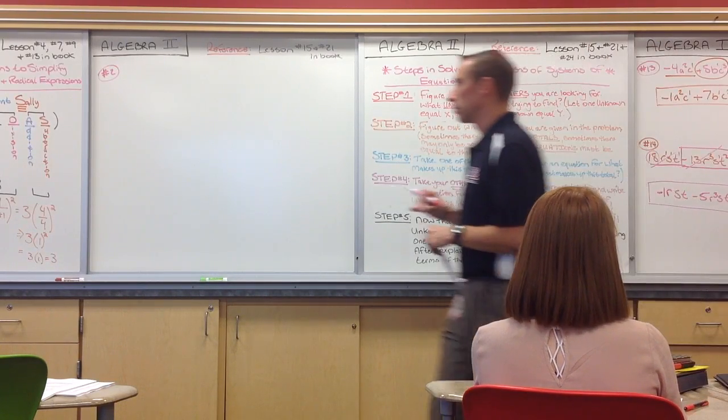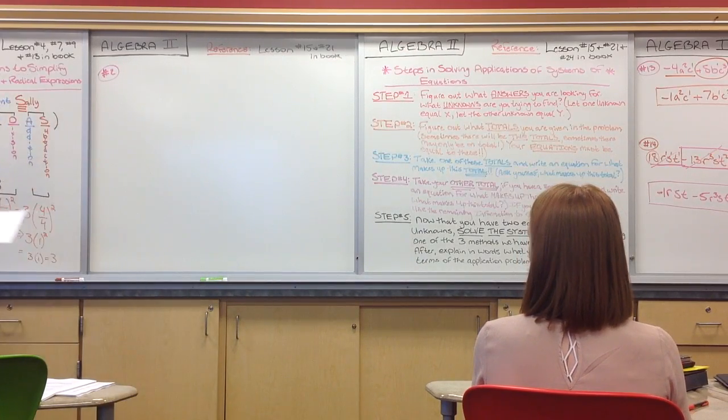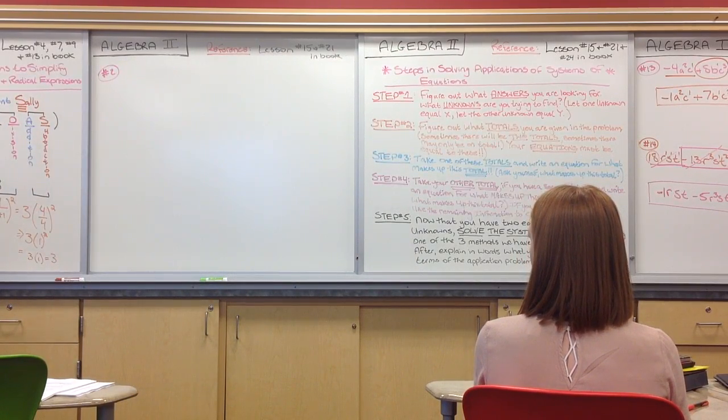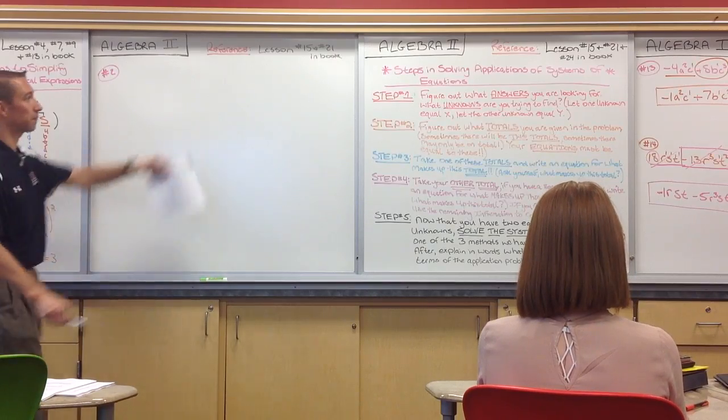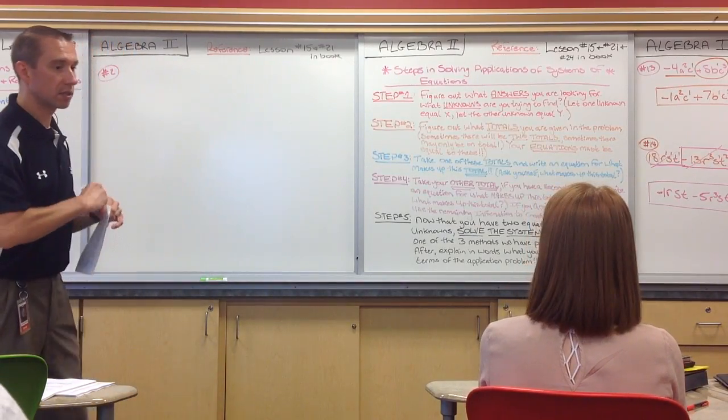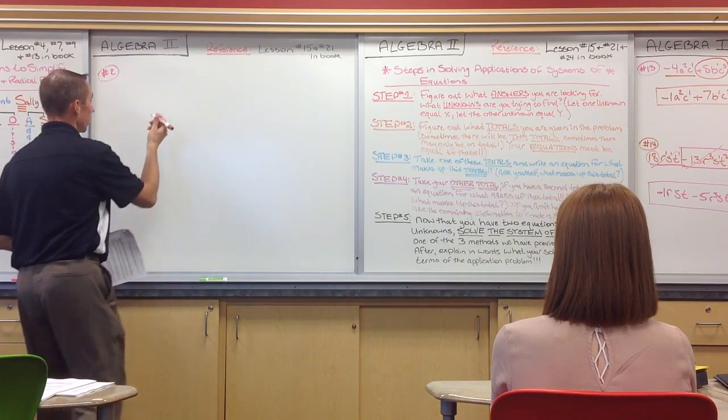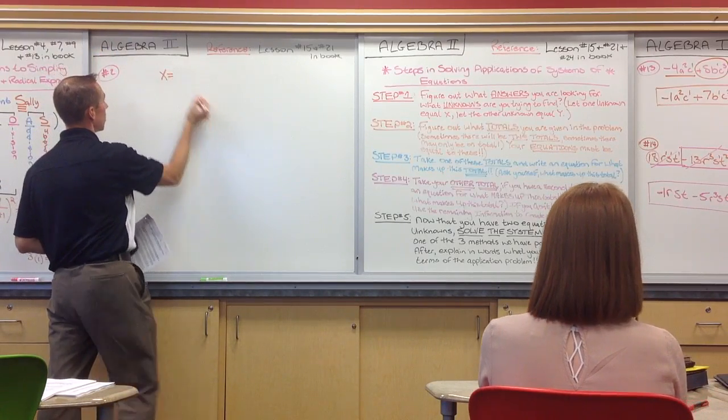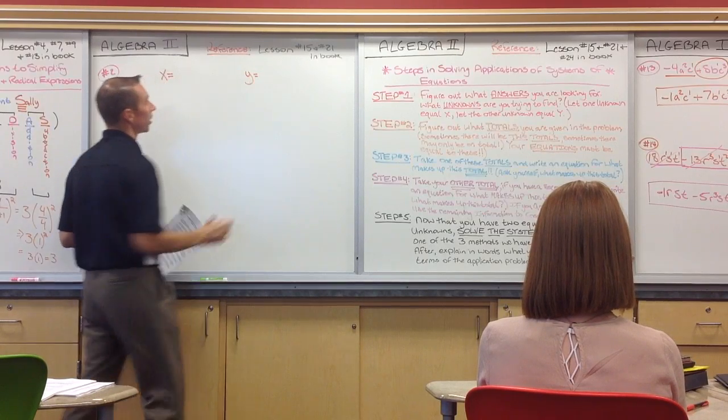So the quicker we go through this, the quicker we'll get to 6 and 8. What do we do to start? Again, the steps are right here on the side of the board. Figure out what you're looking for, exactly. What are my two unknowns? Let one equal X, let the other equal Y.